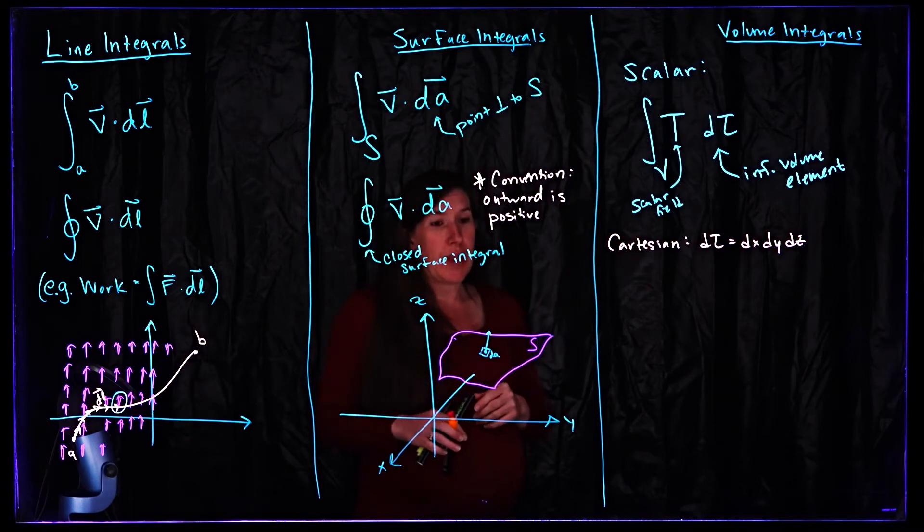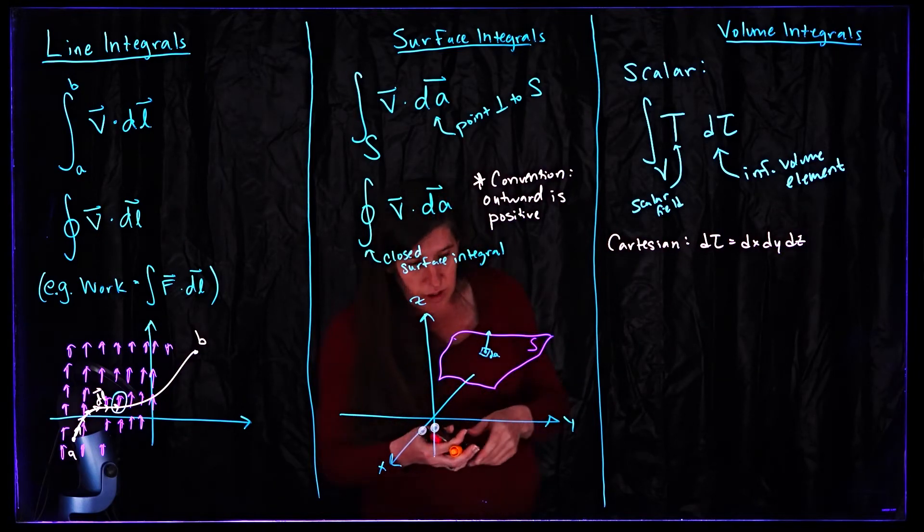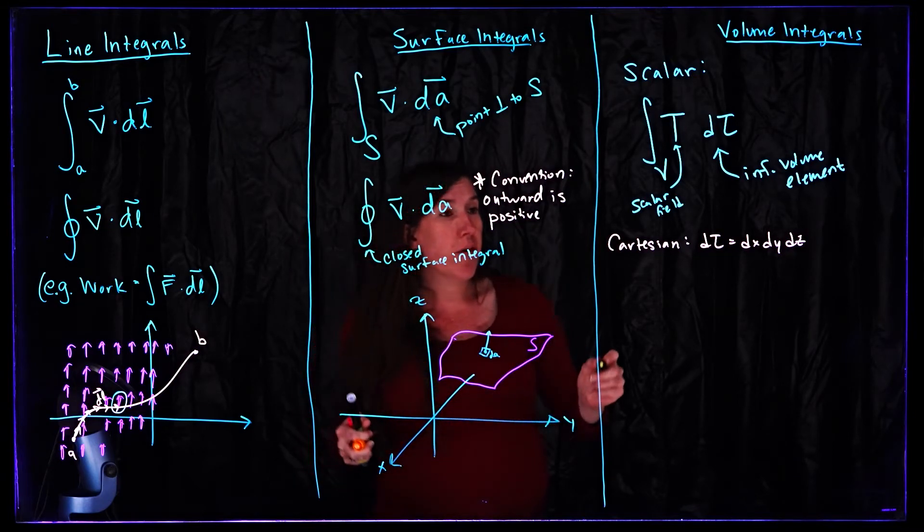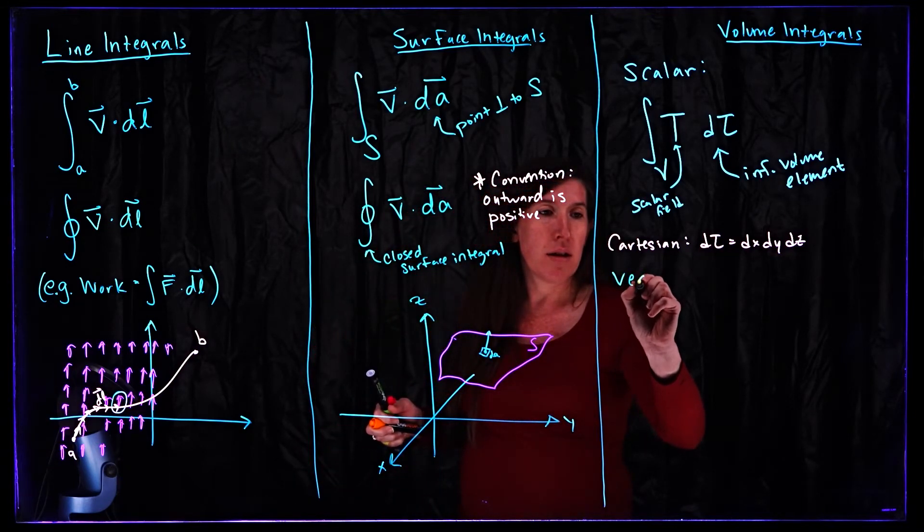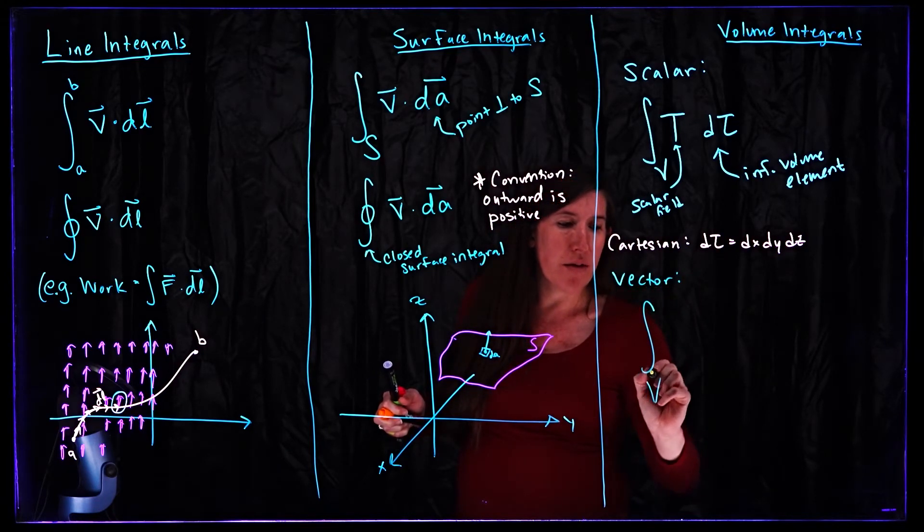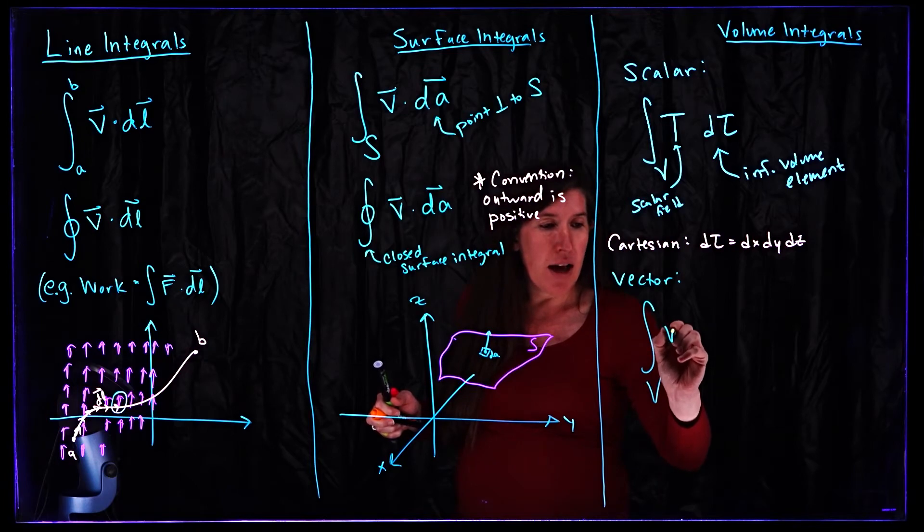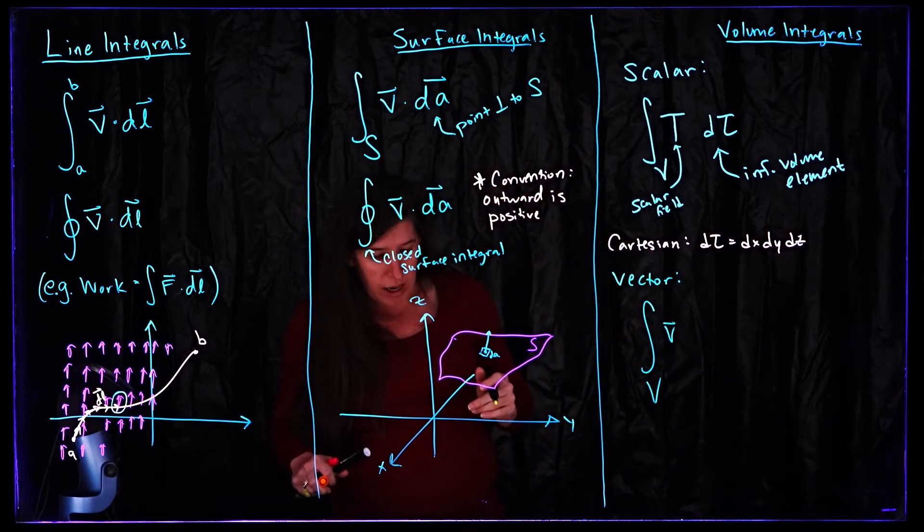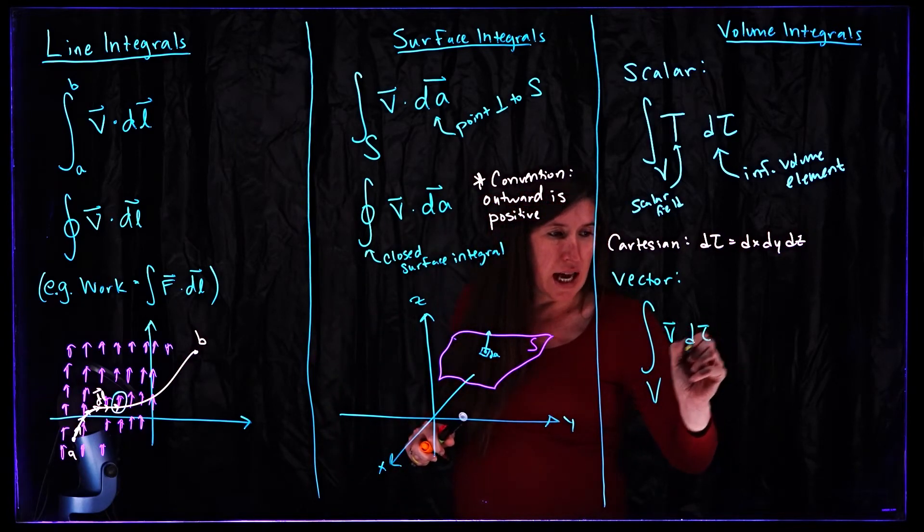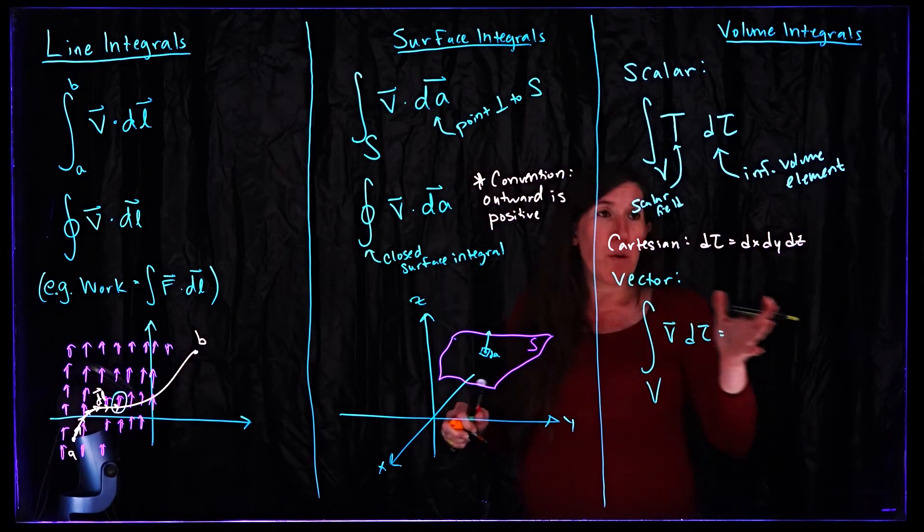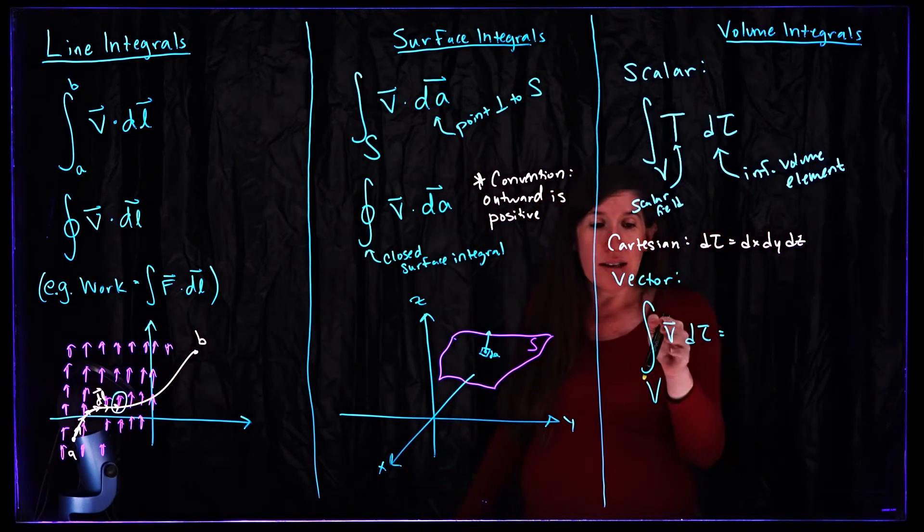But in Cartesian it's simply that. We could also consider taking a volume integral over a vector field. So again we're integrating over some volume now of some vector field which again can be a function of x, y, and z generically speaking, times d tau. What do I really mean by that?